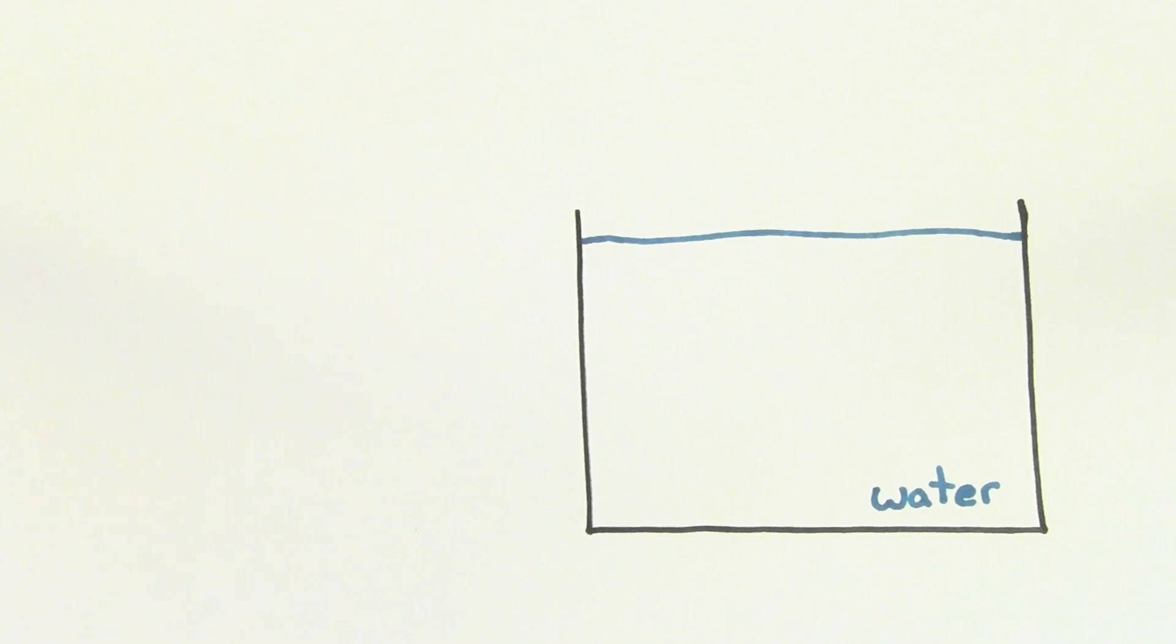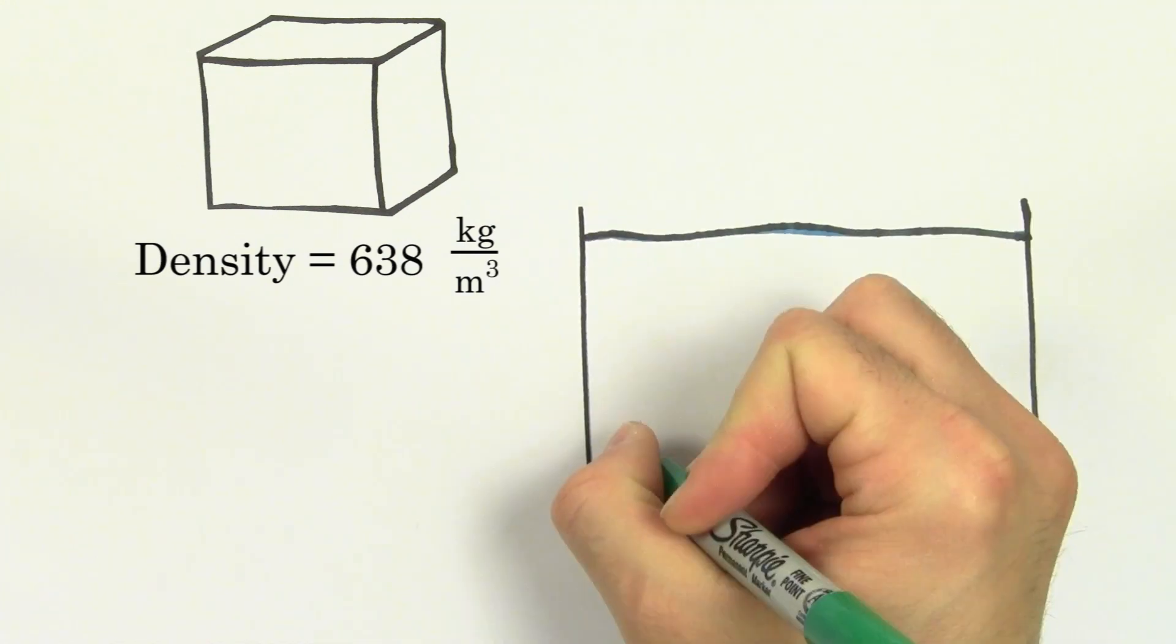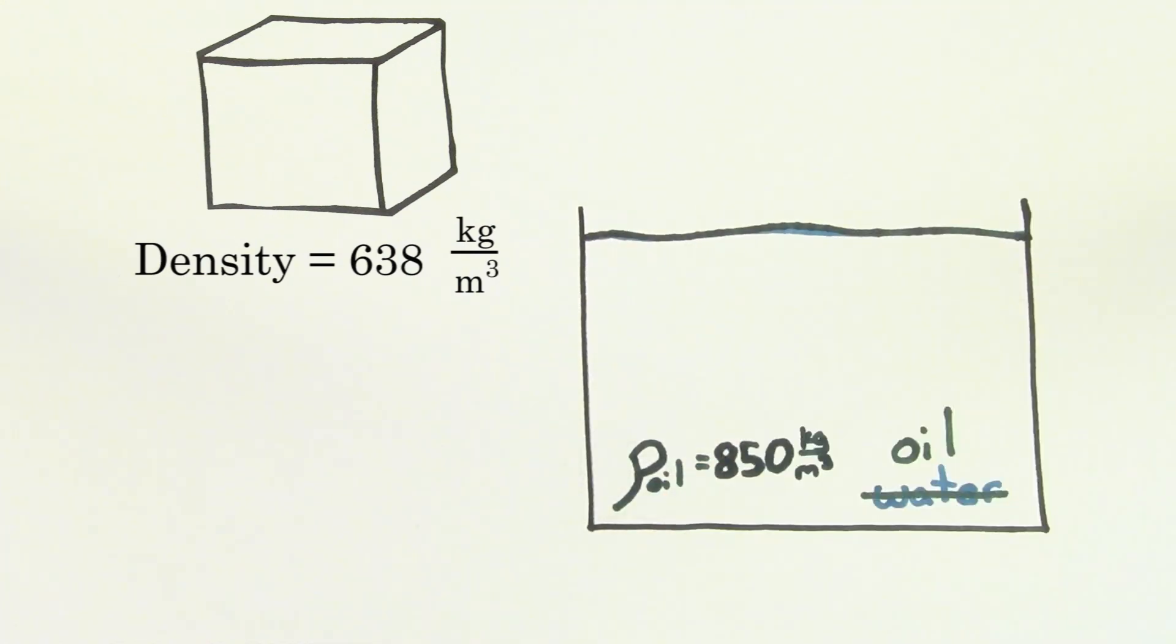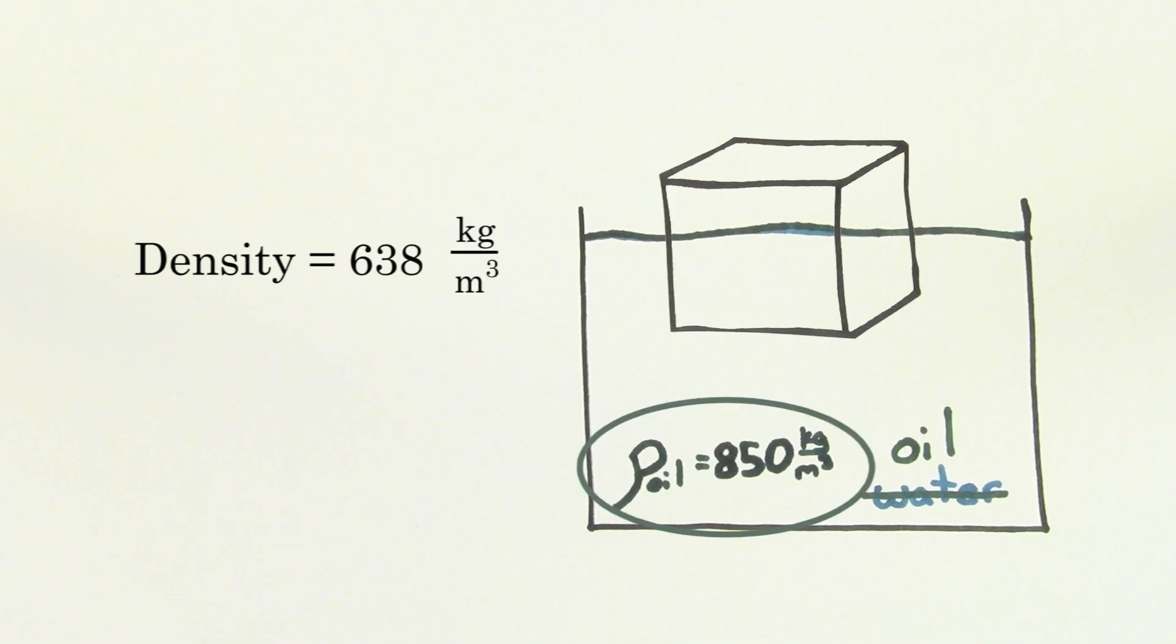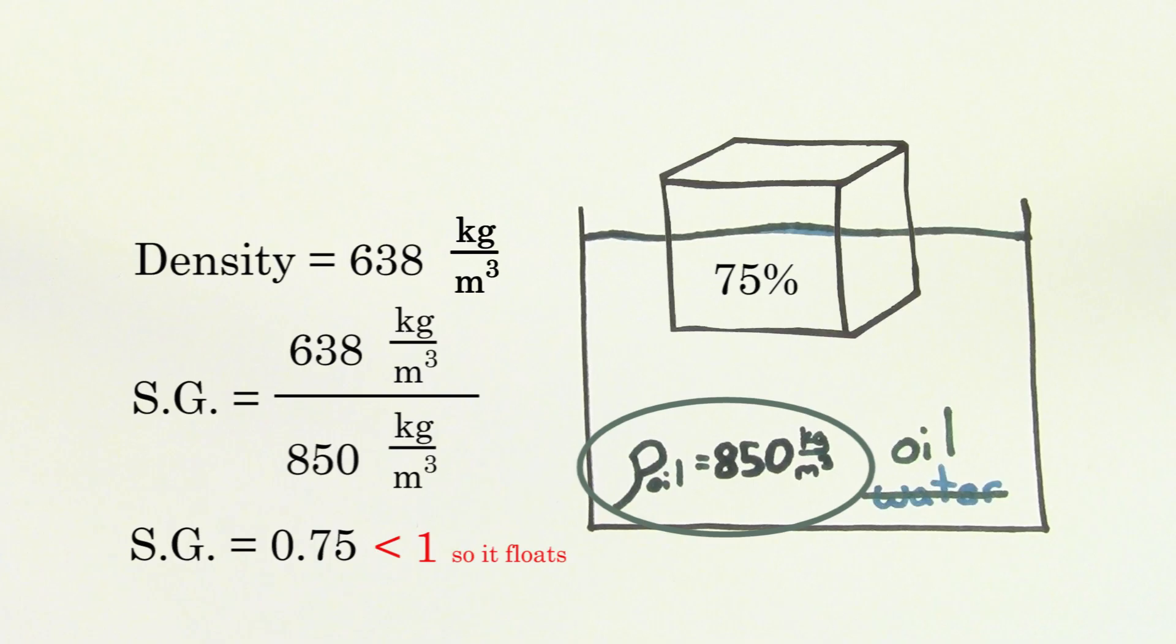For instance, if you were to let some wood of density 638 kilograms per meter cubed float in oil that has a density of 850 kilograms per meter cubed, you could still find the percent of the wood that's submerged underneath the oil. Just use the density of oil instead of the density of water in the specific gravity formula. If we do that, we'll find that the wood does float in this oil, with 75% of the wood's volume submerged beneath the surface of the oil.